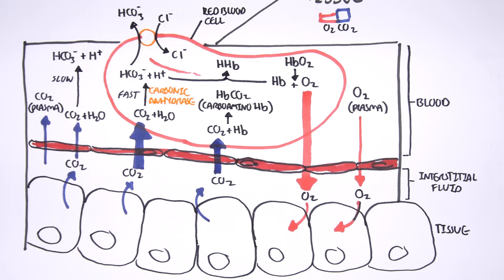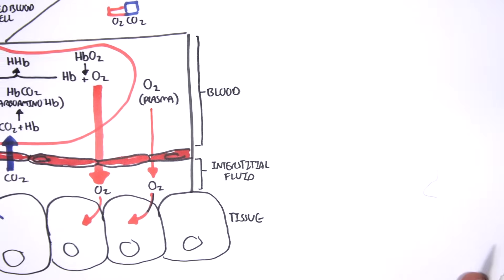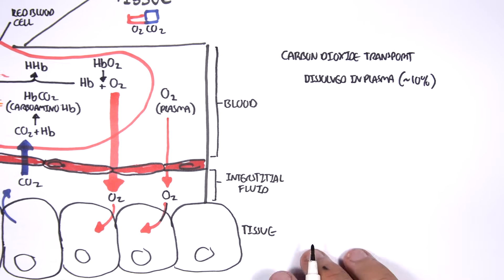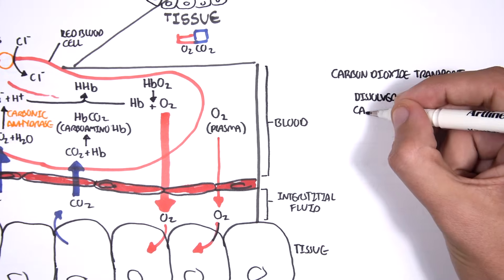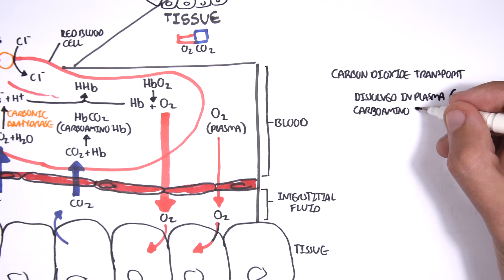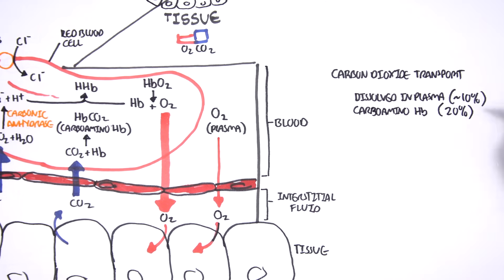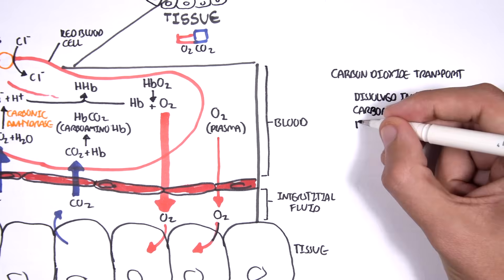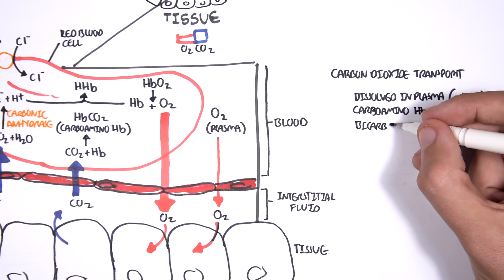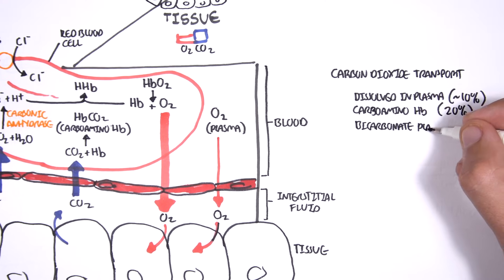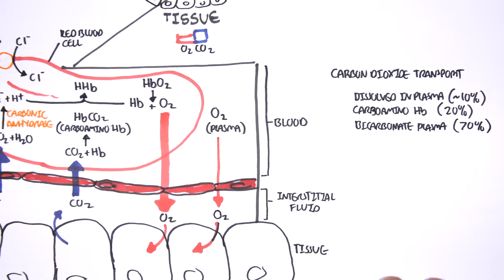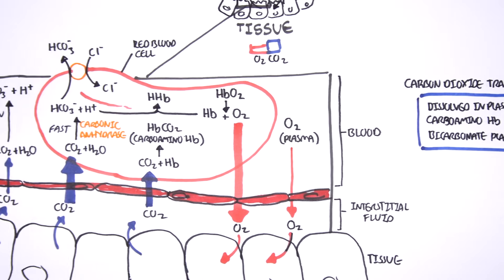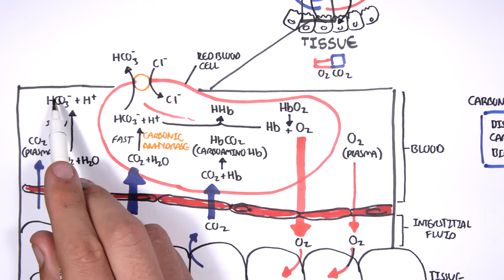If we look at the ways carbon dioxide is transported in the blood, there are three mechanisms. First, carbon dioxide can dissolve in plasma — about 10%. Second, carbon dioxide can react with hemoglobin within red blood cells to form carboaminohemoglobin — about 20%. The last, and the major mode of transportation, is as bicarbonate in plasma — about 70% of the carbon dioxide. Bicarbonate can be formed in red blood cells through a fast process, or in plasma itself through a much slower process.